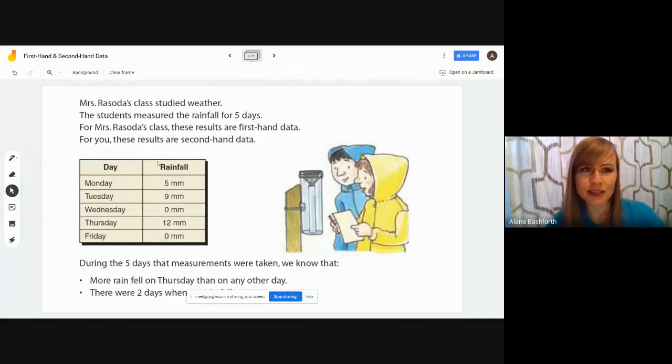Here's an example. Mrs. Rosada's class studied weather. The students measured the rainfall for five days. For Mrs. Rosada's class, these results are first-hand data. For you, these are second-hand data. You can see how much rain fell each day: five millimeters, nine millimeters, zero millimeters, twelve millimeters, and then zero millimeters. For them that's their first-hand data because they measured it with their gauge and then they wrote down the numbers themselves. During the five days that measurements were taken, we know that more rain fell on Thursday than any other day. We can see right there Thursday is twelve millimeters. There were two days where there was no rain that fell at all. That's the observation we can make just by looking at the data and comparing it.